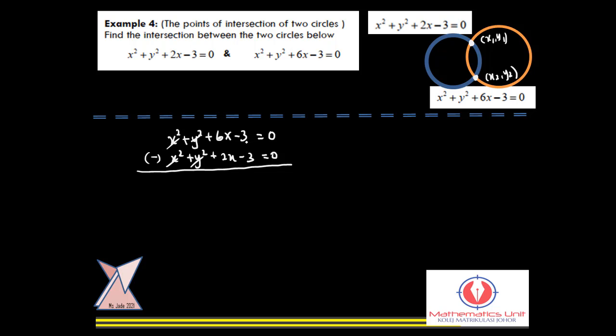When you minus it, the reason and purpose we need to minus is because we can get rid of the x² + y². At the same time, these two equations coincident, the constant is -3, so it's also eliminated. We only left 4x = 0, a linear function. Therefore, we found that x = 0. So this one is referring to s1 and s2.